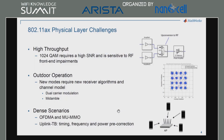The third area is dense scenarios. 802.11ax targets efficiency rather than throughput — for example, in a scenario with 200 to 250 people all trying to use WiFi at the same time, or an IoT scenario with lots of sensors. They've added OFDMA and multi-user MIMO capabilities at the downlink and uplink to deal with this, and there are a number of challenges for algorithms at the AP and stations, including timing, frequency, and power pre-corrections.